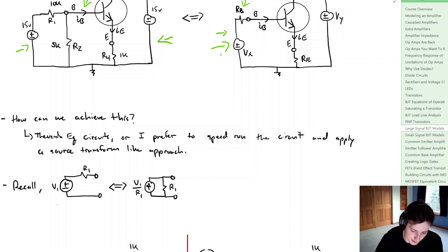Recall that if we have something that looks like this, or we have a voltage source and a resistor, we can source transform that, or pseudo source transform that per se, into a current source which is equal to the voltage divided by the resistor in the circuit here, and then we just have our resistor in parallel.